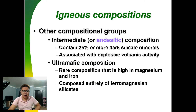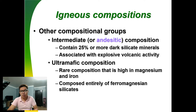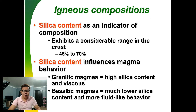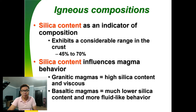Other igneous compositions include intermediate or andesitic composition, which contains more dark silicate minerals and is associated with explosive volcanic activity. There is also ultramafic composition, which is rare, with high content of magnesium and iron, and is composed of ferromagnesian silicates.